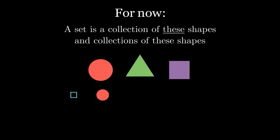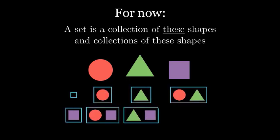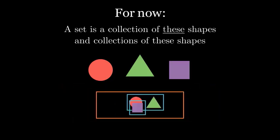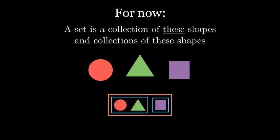So we could have the set of all possible sets of shapes. Or the set that contains just the set of the circle and triangle, as well as the set of the square. And maybe if we're really adventurous, we could have a set that contains both sets of shapes, and the shapes themselves, say this one, which contains the set of the circle, the set of the triangle, and the triangle itself.